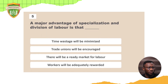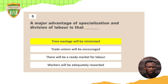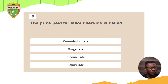Question five: a major advantage of specialization and division of labor is that time wastage will be minimized. When we have many people specializing in different areas, time wastage is minimized. Question six: the price paid for labor service is called — the answer is wage rate. How much you are paid is the wage rate. Wage rate is the standard answer for this type of question.